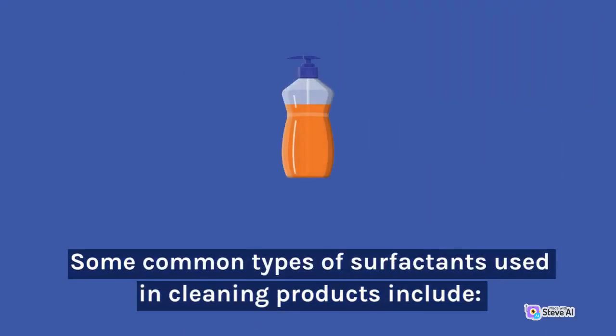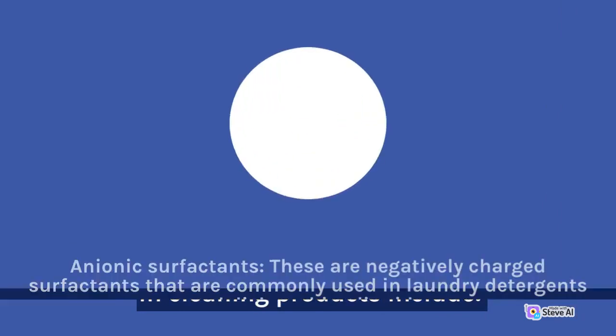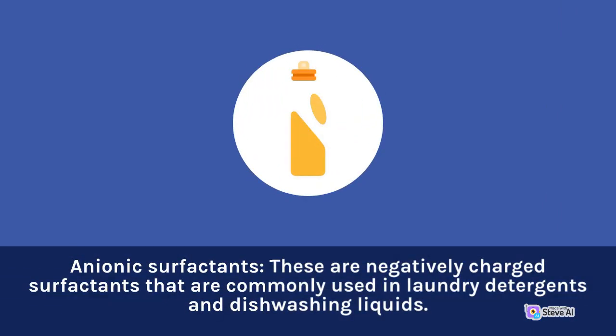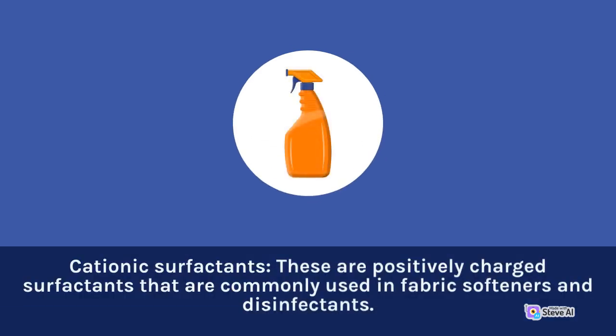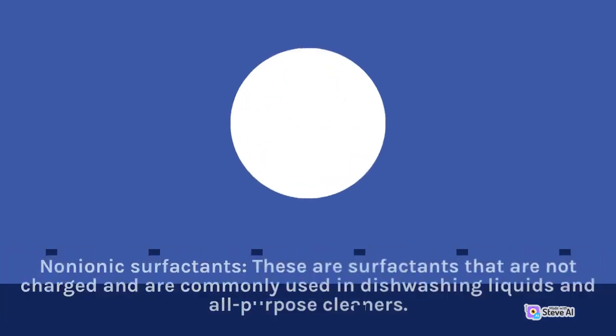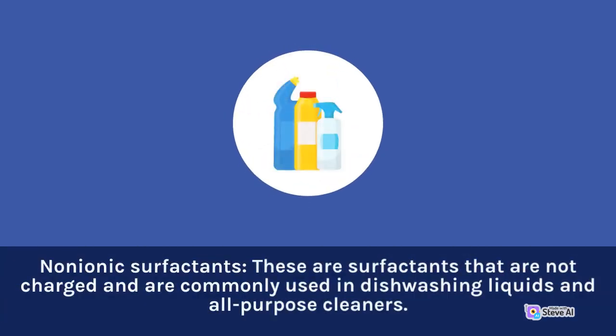Some common types of surfactants used in cleaning products include: Anionic surfactants, which are negatively charged and commonly used in laundry detergents and dishwashing liquids; Cationic surfactants, which are positively charged and commonly used in fabric softeners and disinfectants; and Nonionic surfactants, which are not charged and commonly used in dishwashing liquids and all-purpose cleaners.